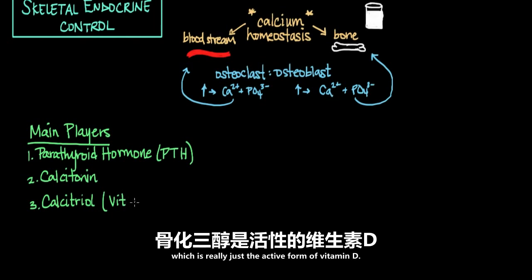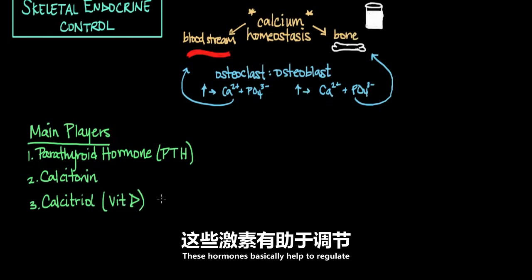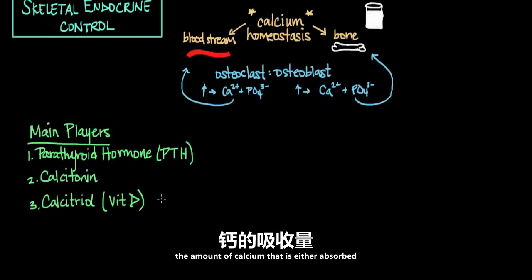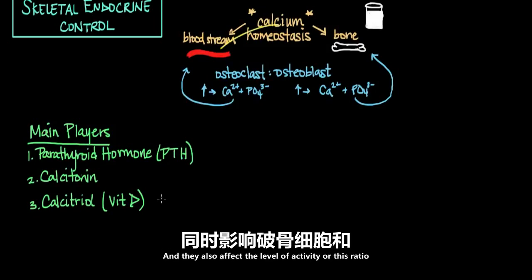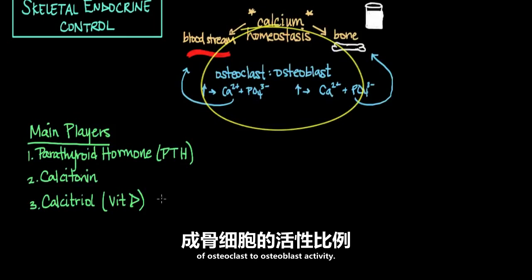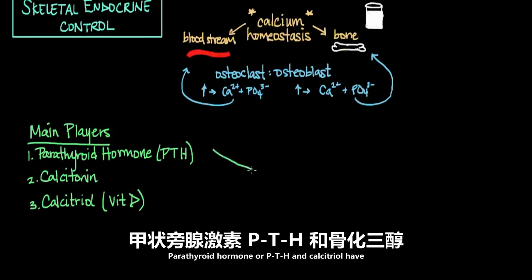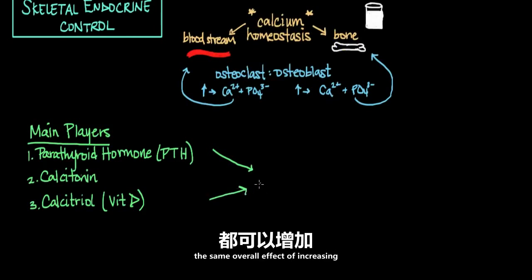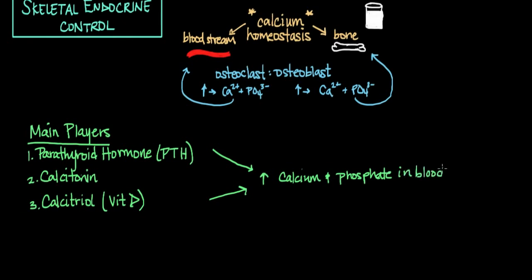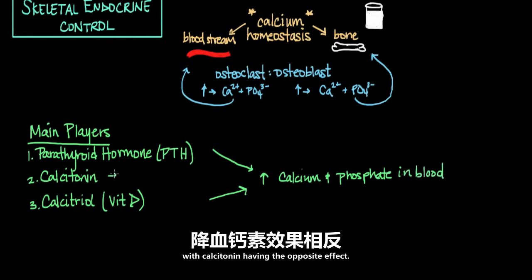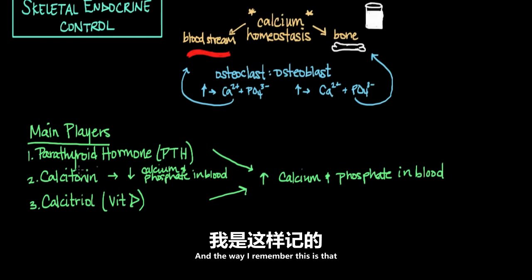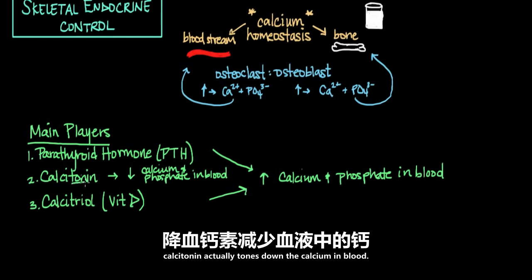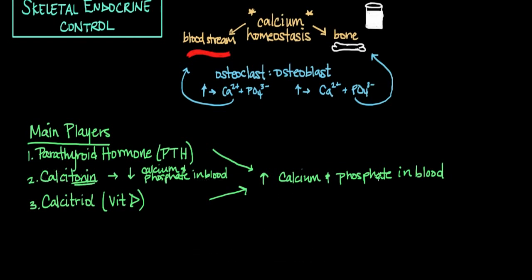These hormones help regulate the amount of calcium that is either absorbed from the gut or reabsorbed from the kidneys, and they also affect the ratio of osteoclast to osteoblast activity. Parathyroid hormone and calcitriol have the same overall effect of increasing calcium and phosphate in the blood, while calcitonin has the opposite effect — it decreases calcium and phosphate in the blood.